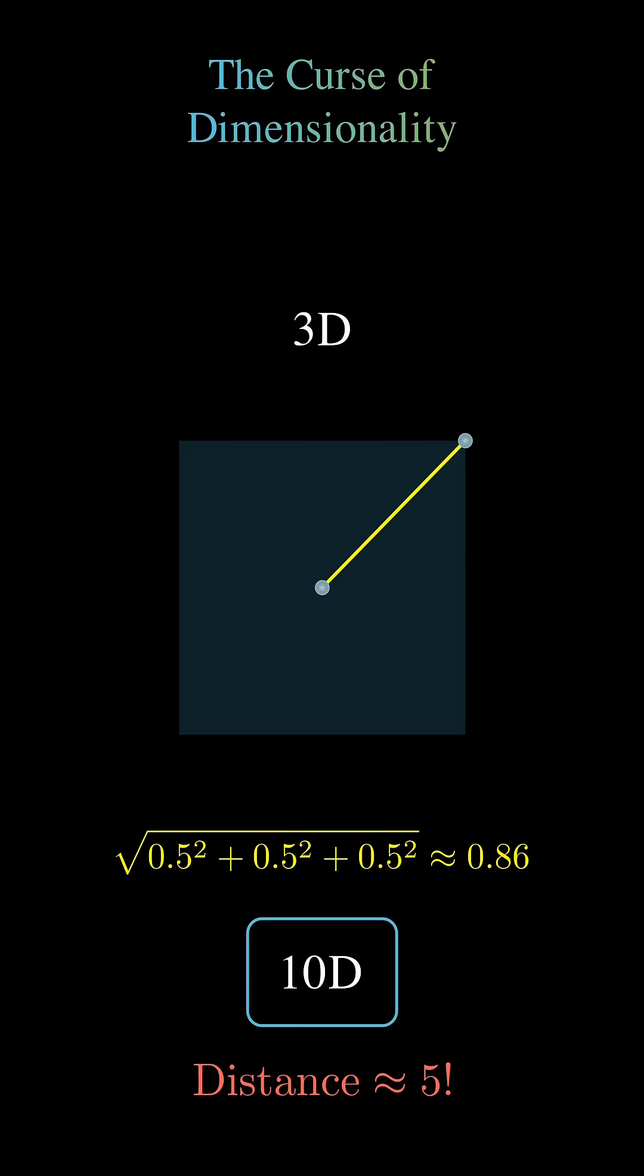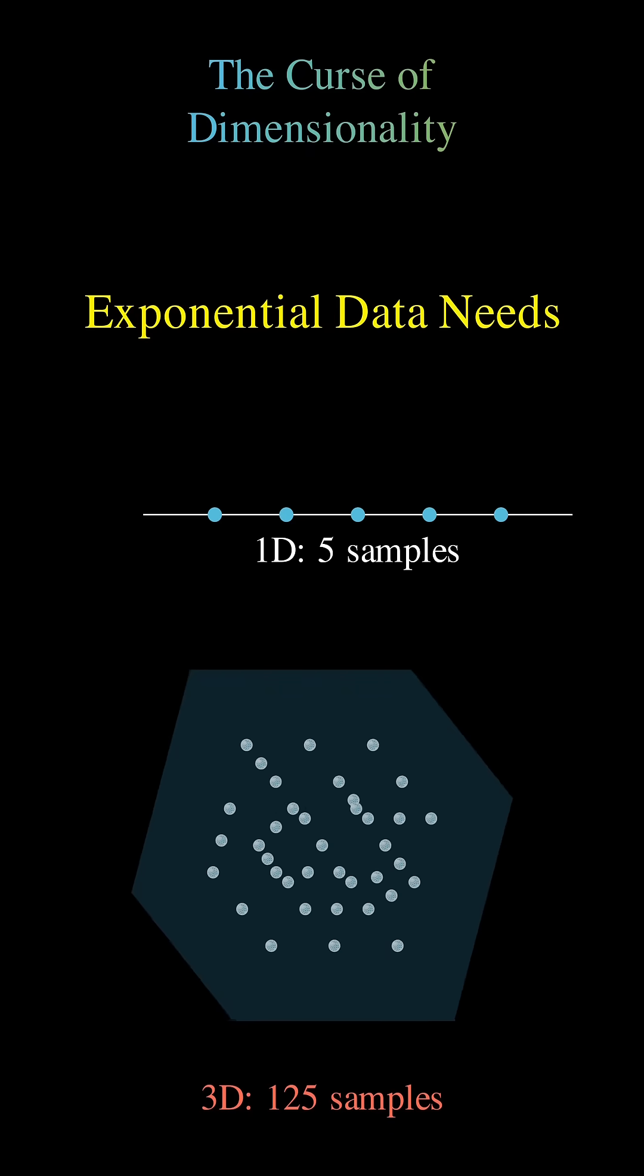For machine learning, this translates to exponential data needs. 5 samples in 1D becomes 125 samples for 3D.